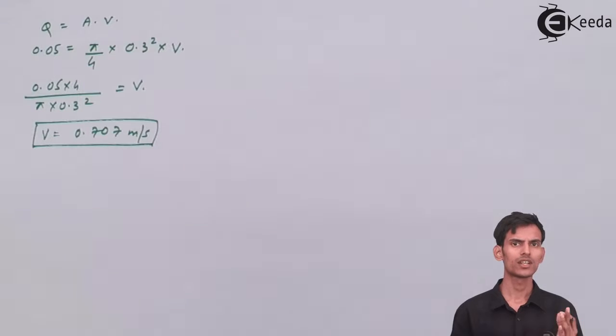The velocity at both ends are same since it is a uniform pipe so there will be no change in velocity and the datum, the difference in the head, the datum head is also given. So the only unknown remains is the pressure head at point B. So that can be easily found out if you use Bernoulli's equation between point A and B.